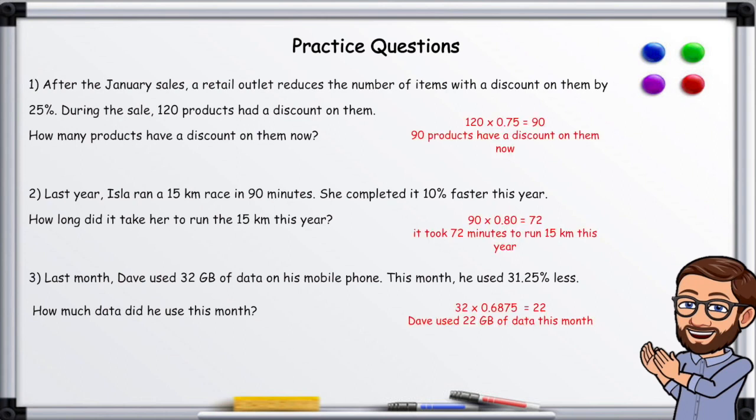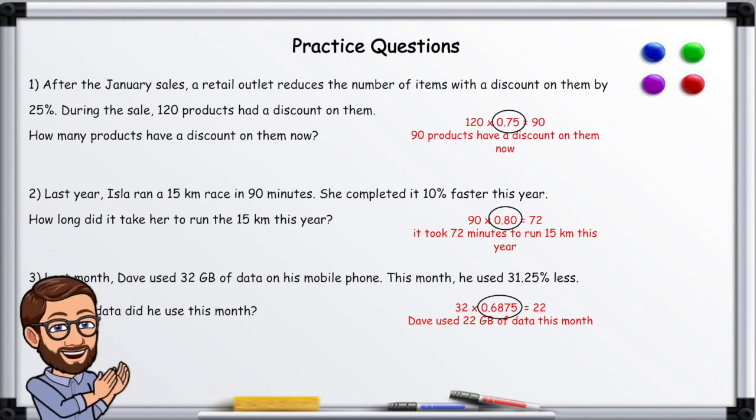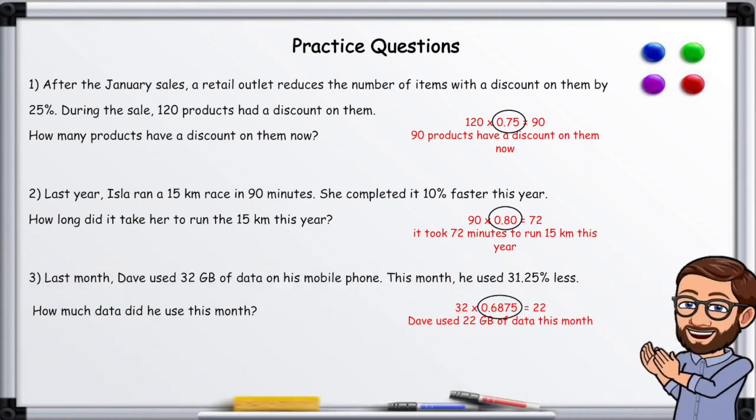And here's the answer. Here you can see I've circled the decimals that we've multiplied the value given by to get our decrease. So if you see that first one here, we take away 25 from 100, then we divide our total by 100 to get a decimal, and then we multiply it by the original total given. So as you can see, 120 multiplied by 0.75 equals 90.